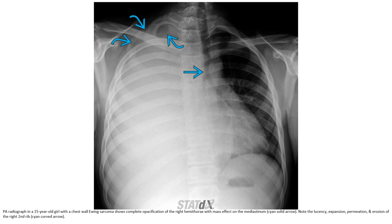This is the chest radiograph of a patient with a chest wall tumor. There is complete opacification of the right hemithorax with mass effect on the mediastinum. Note the lucency, expansion, permeation, and erosion of the right ribs.